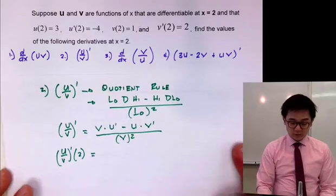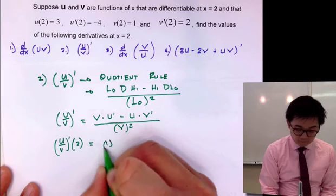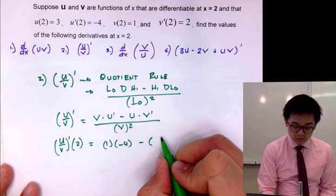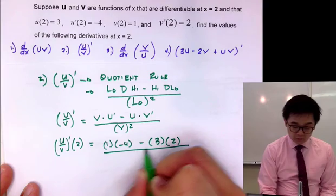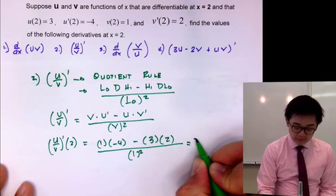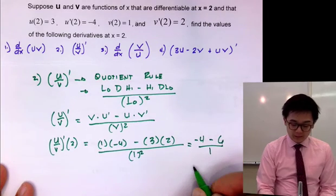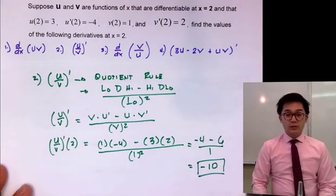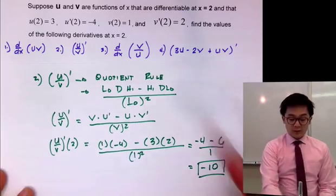Using the given values: v(2) = 1, u'(2) = -4, u(2) = 3, and v'(2) = 2, all over v(2) = 1 squared. So we get 1 times (-4) minus 3 times 2, all over 1, which is negative 4 minus 6, all over 1. Negative 4 minus 6 is simply negative 10. So the derivative for problem number 2 is negative 10.